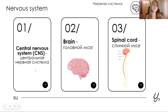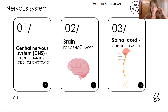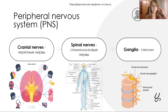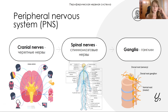The next system is the nervous system. It is divided into the central nervous system, or CNS, and the peripheral nervous system, or PNS. The CNS includes the brain and spinal cord. The PNS consists of nerves and ganglia. Nerves can be spinal or cranial — we have 12 cranial nerves and a great number of spinal nerves, as well as ganglia.